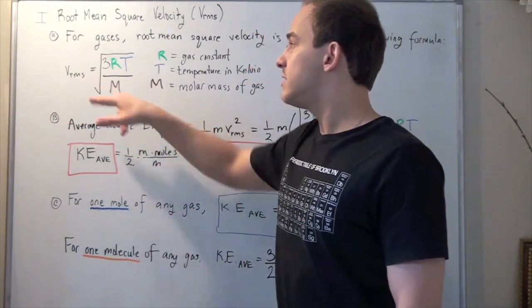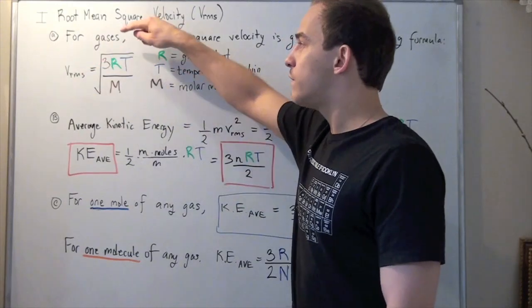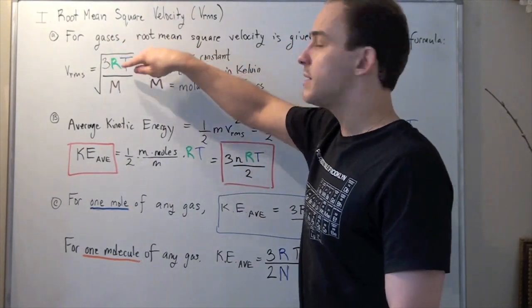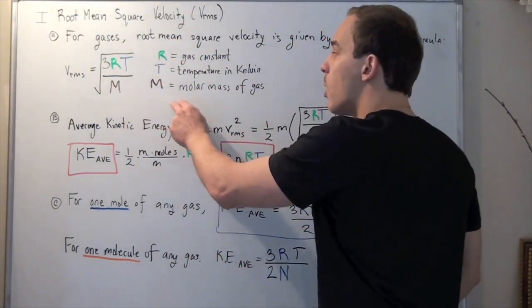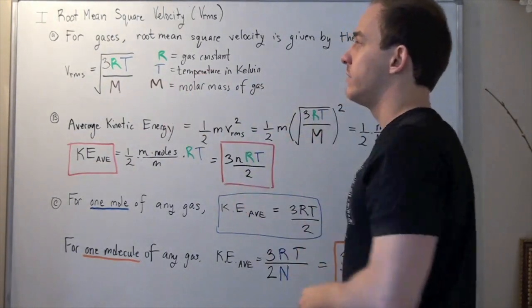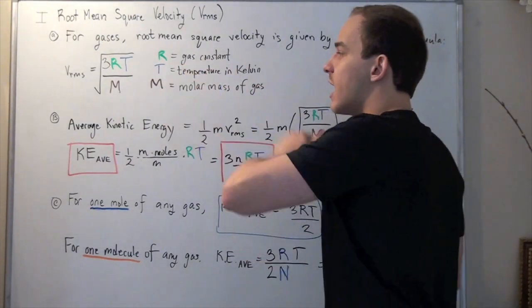So VRMS is equal to the square root of 3 times R times T divided by M, where M is our molar mass of gas, T is our temperature in Kelvin, and R is the molar gas constant.